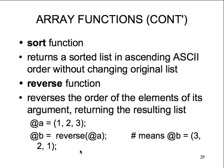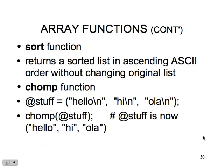Sort and reverse: sort returns the list in ascending order without changing the original list. Reverse switches the order: if A is (1, 2, 3), then B = reverse A gives B = (3, 2, 1). The chomp function applied to an array pulls off the newline character for each element in the array instead of just a single scalar - same function, applied to an array. There's a lot of consistency in Perl as a language.